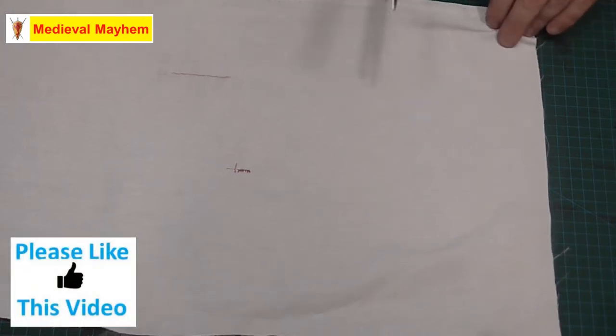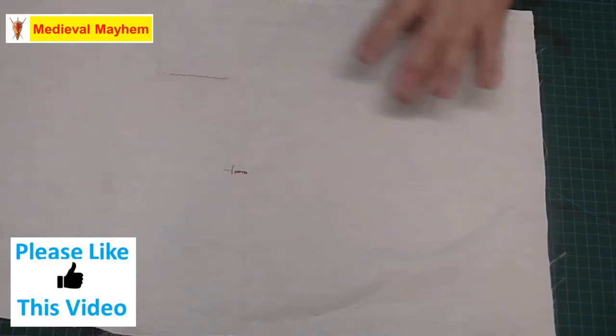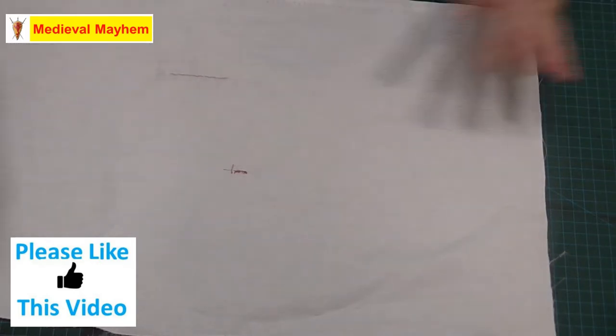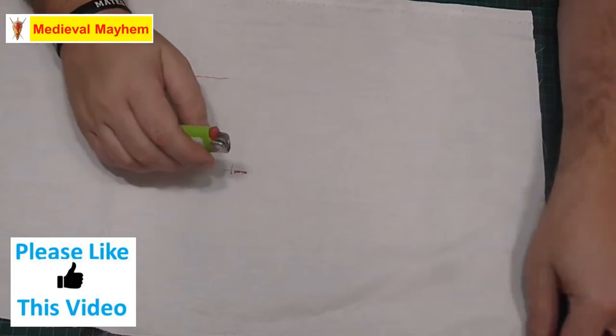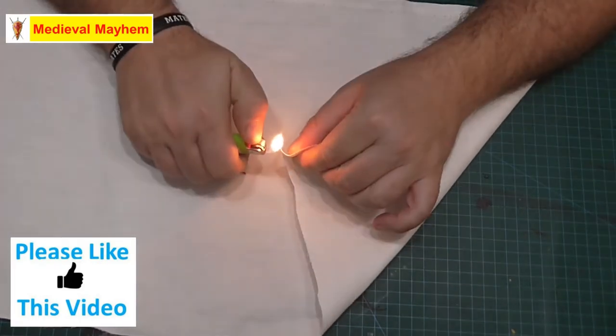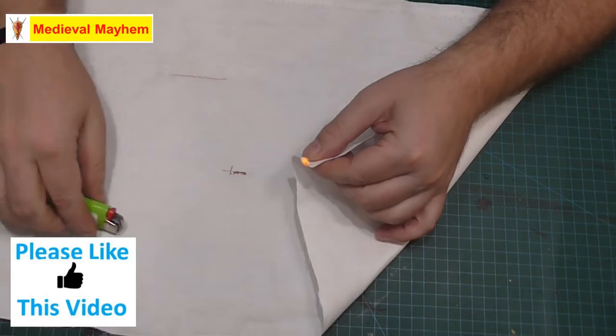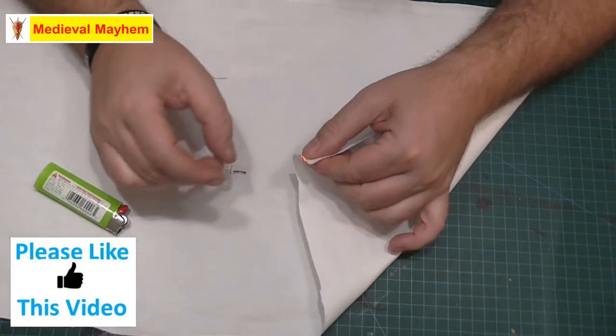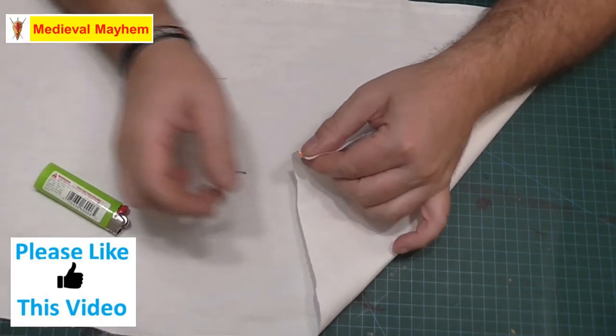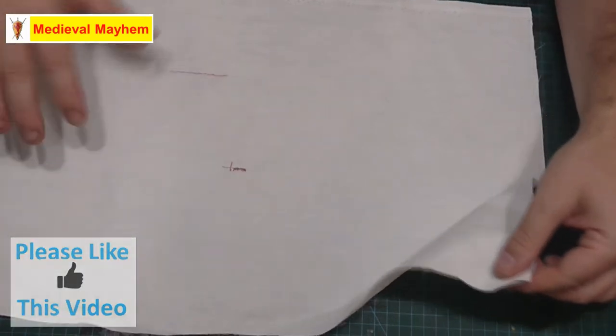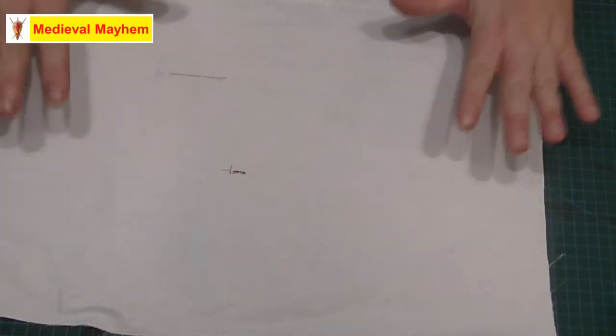Next thing you want to do is select your fabric. So a really simple way to check that is to burn the edge. Do a burn test. Now you can see that's burning nicely, cleanly, and there's no melting. So what that means is there's nothing synthetic about this fabric.